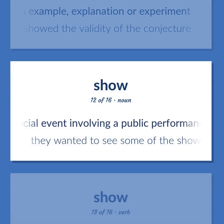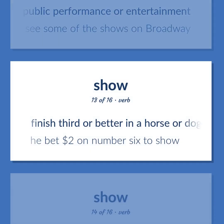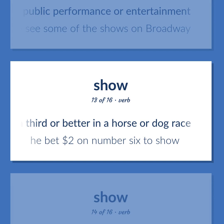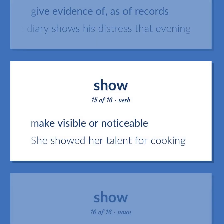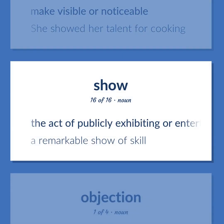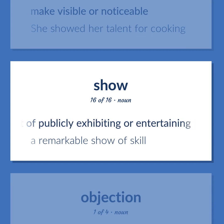Show: A social event involving a public performance or entertainment — they wanted to see some of the shows on Broadway. Finish third or better in a horse or dog race — he bet $2 on number six to show. Give evidence of, as of records — the diary shows his distress that evening. Make visible or noticeable — she showed her talent for cooking. The act of publicly exhibiting or entertaining — a remarkable show of skill.